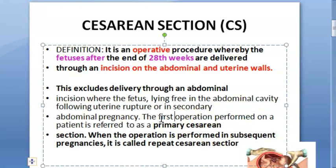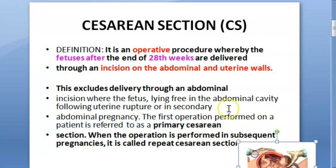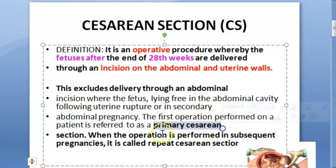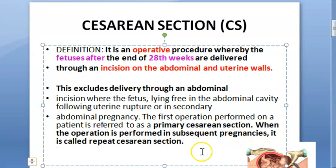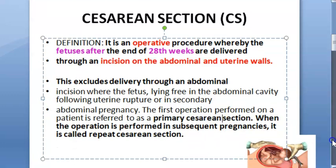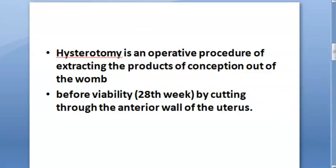The first operation performed on a patient is referred to as primary caesarean section. If it is the first caesarean you are having, it is called a primary caesarean section. Subsequent ones will be called repeat caesarean section.